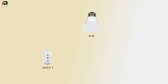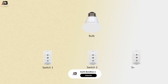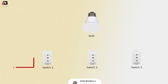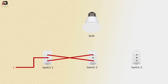Bulb, Switch 1, Switch 2, Switch 3. Press connection input to Switch 1 common terminal. Press connection between Switch 1 and 2, L1 and L2 terminal. Another connection between Switch 1 and 2, L2 and L1 terminal.